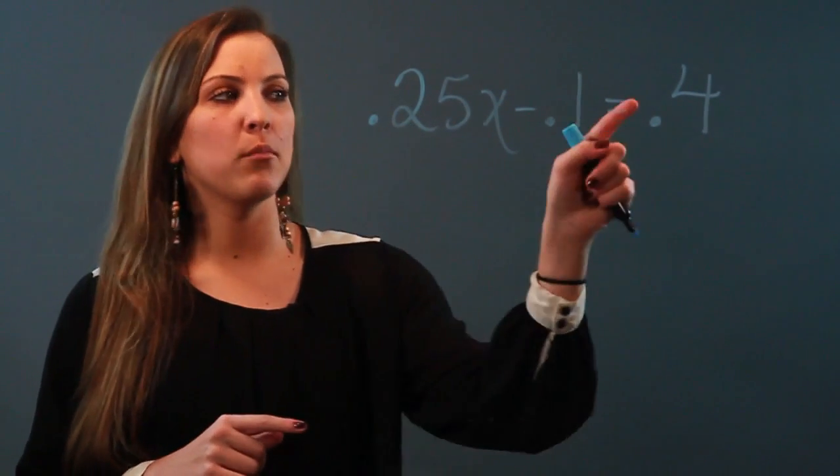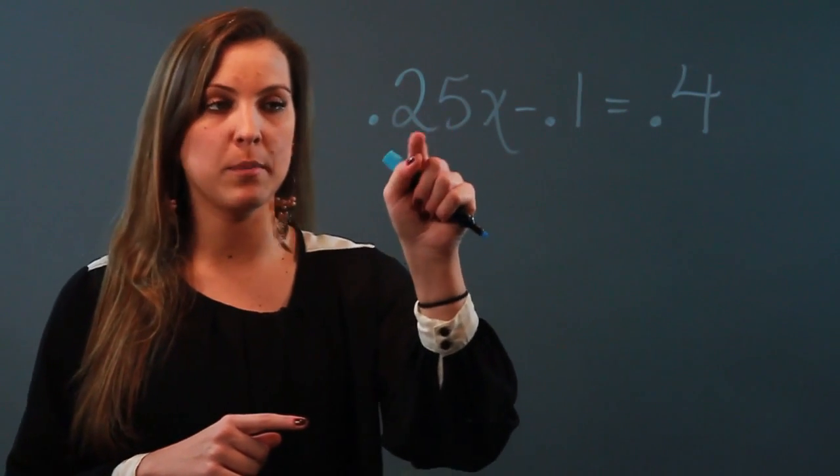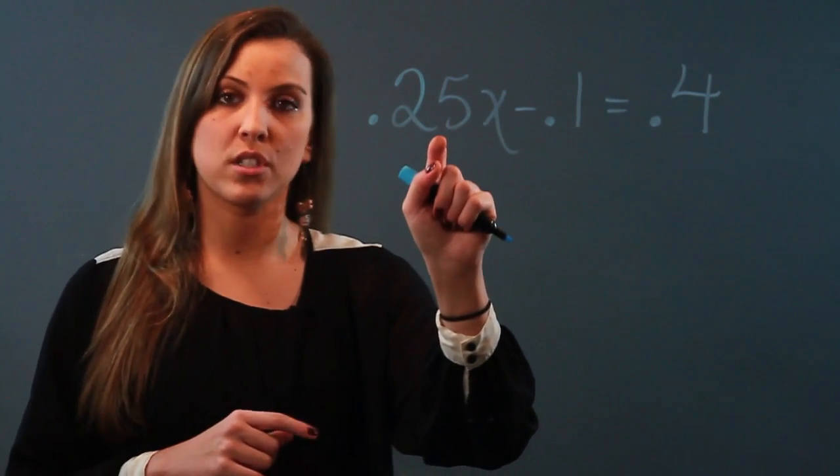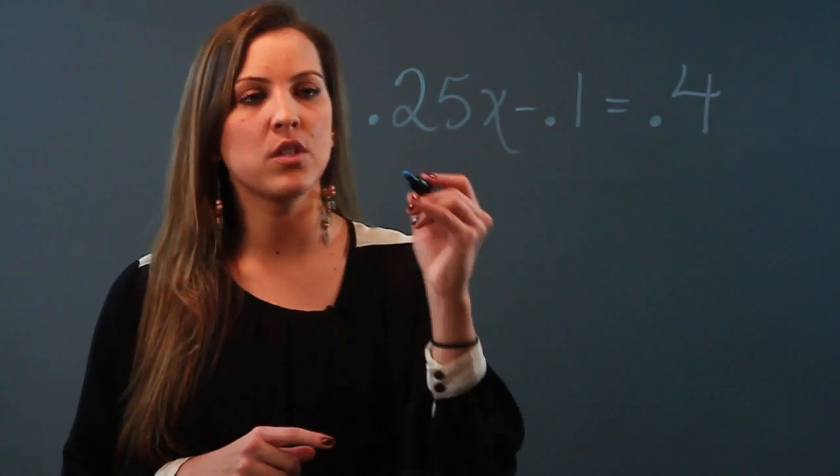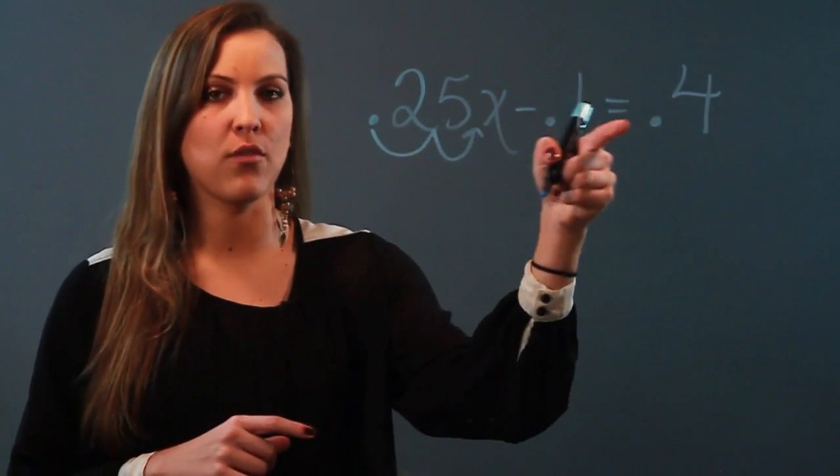But if I moved every term one decimal space over, I wouldn't get rid of all the decimals because that would make 0.25 just 2.5. So what I want to do is move two spaces over because that would get rid of all my decimals.